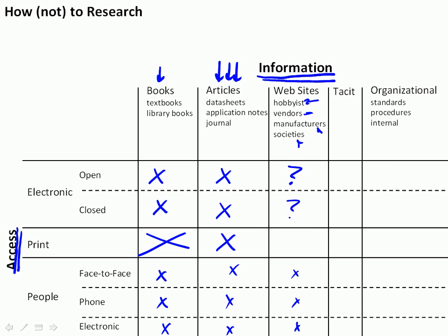Another type of information is tacit information — stuff that somebody really needs to show you; you really can't read about it accurately in a book. Open electronic information such as YouTube videos can be somewhat of a source of tacit information, but the primary source is face-to-face contact with people. Be aware that there are types of knowledge that cannot be transmitted unless you sit down with somebody and learn from them.